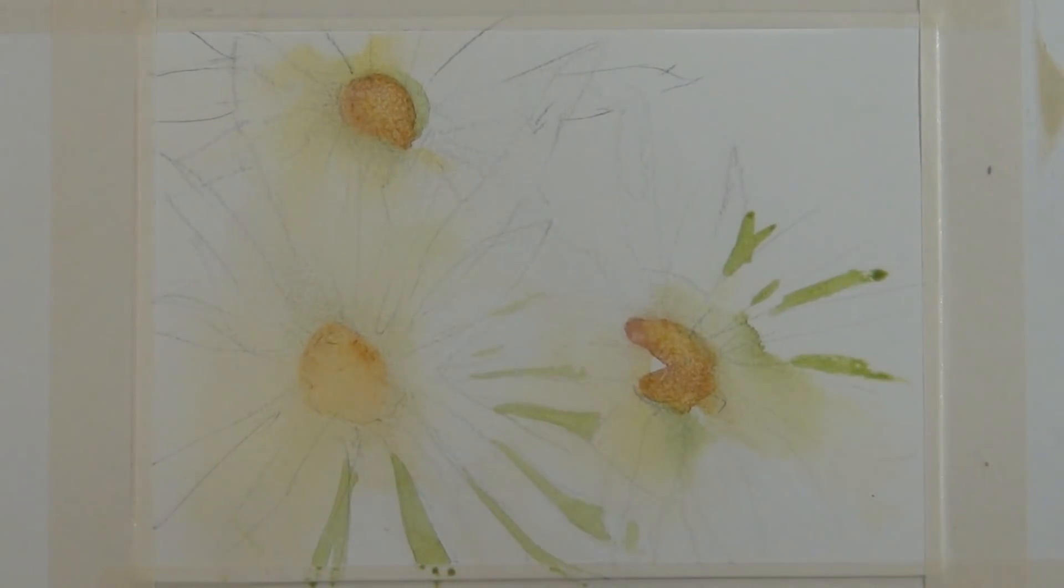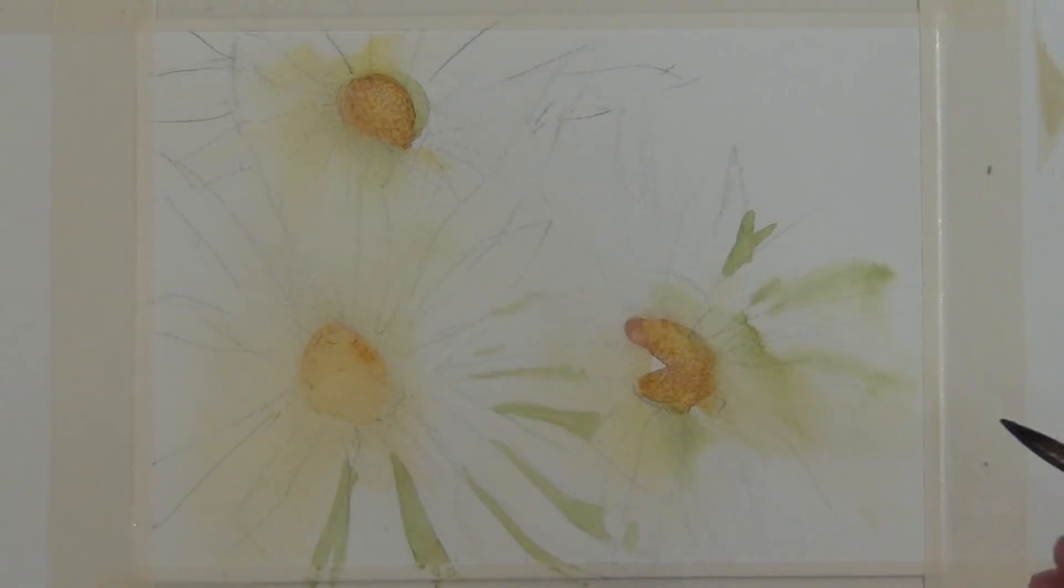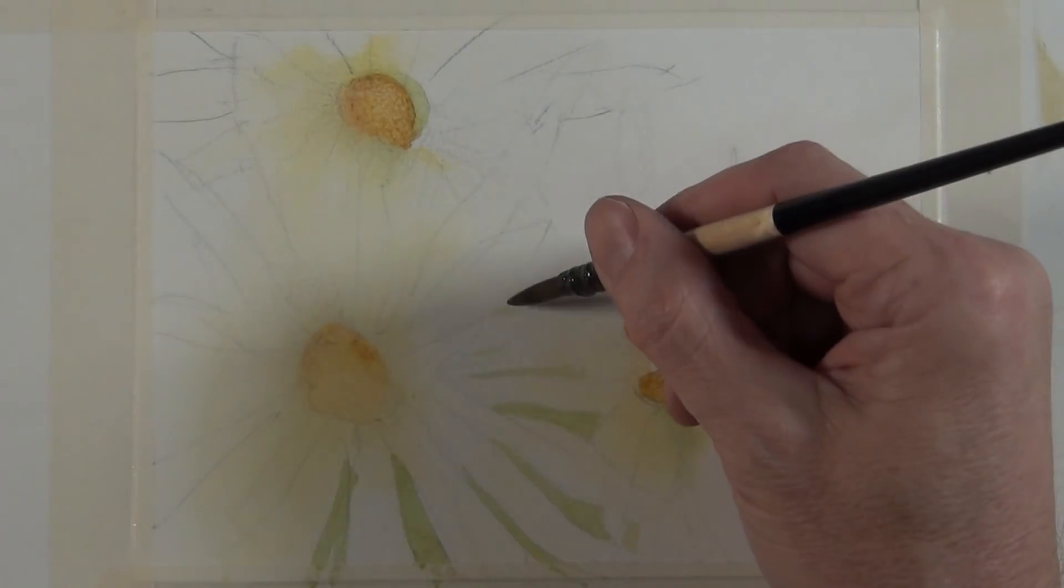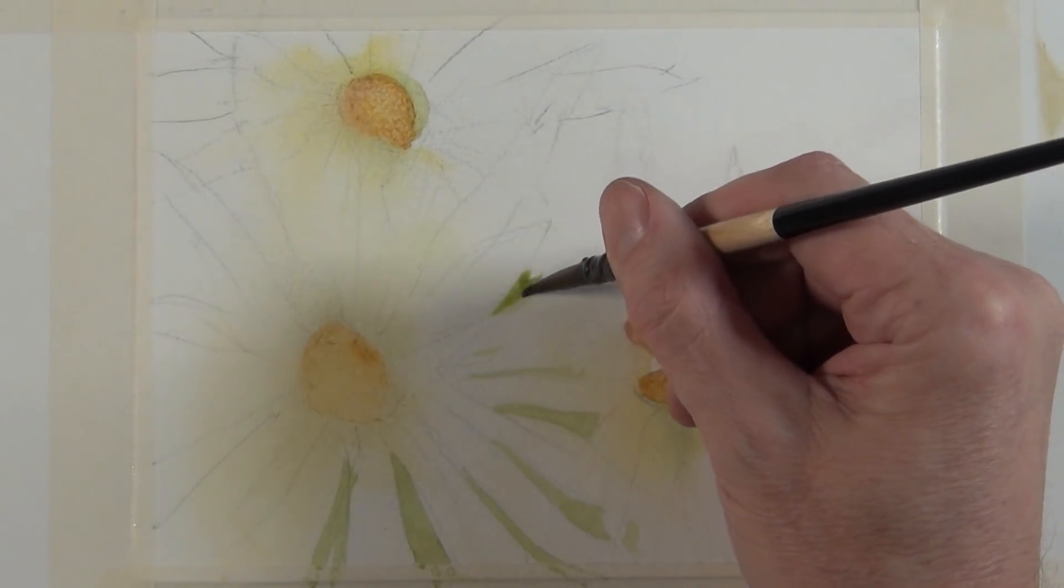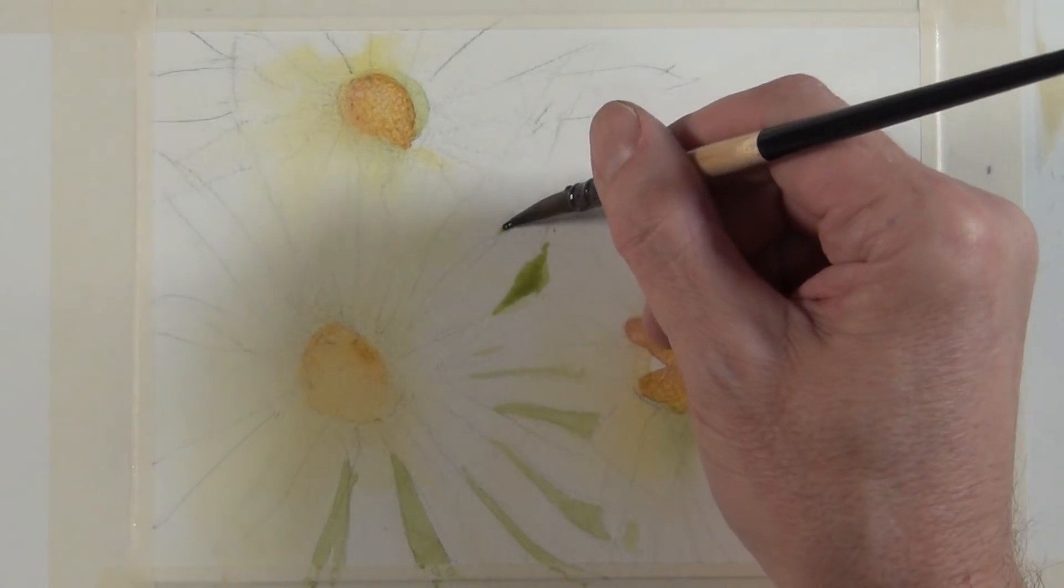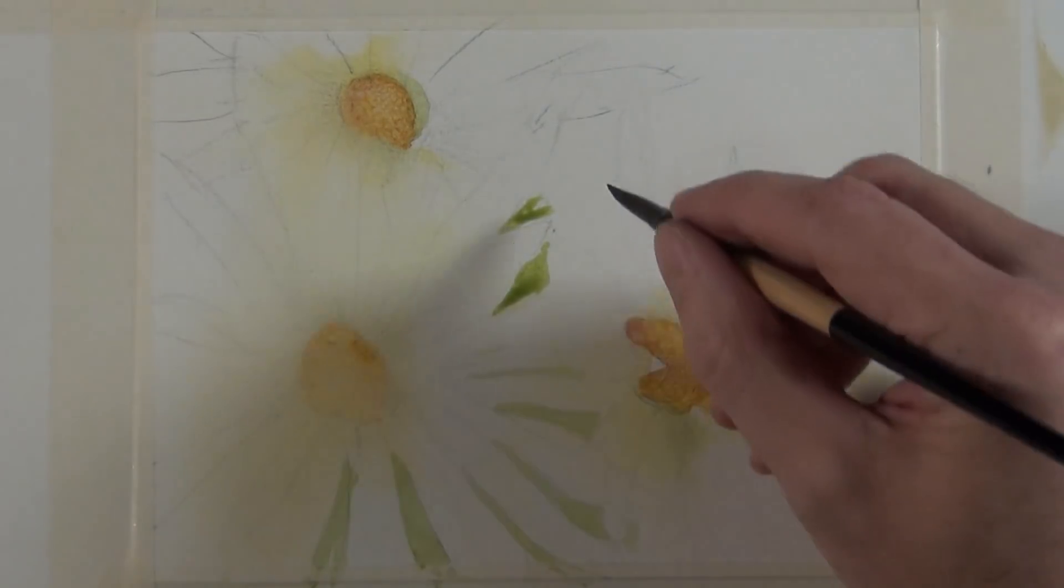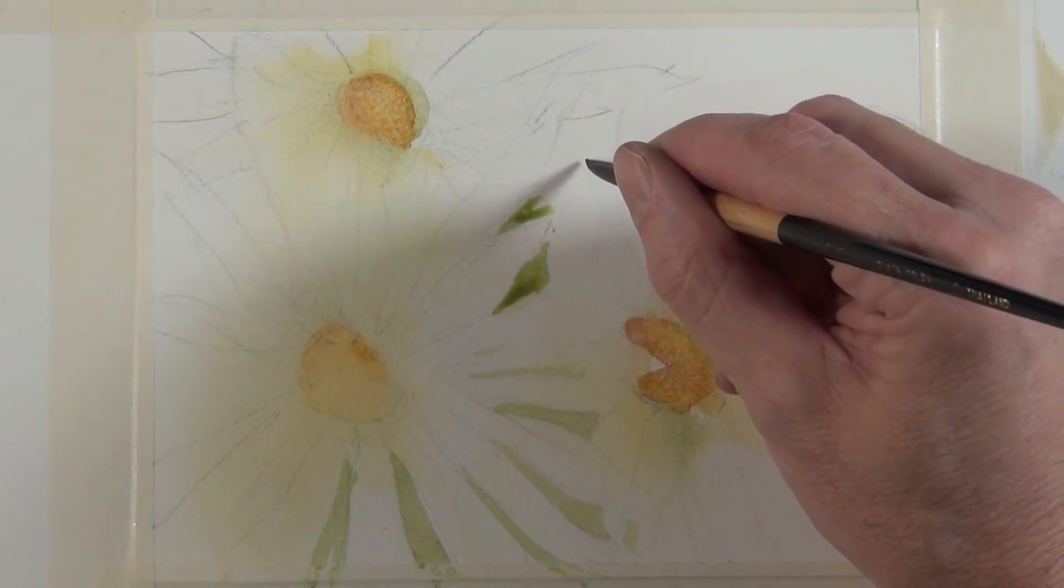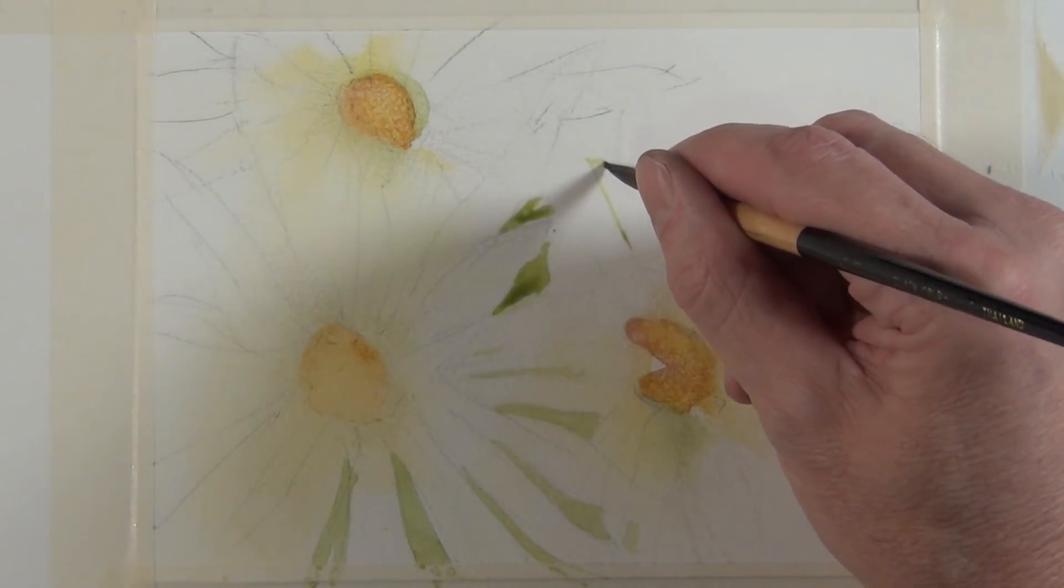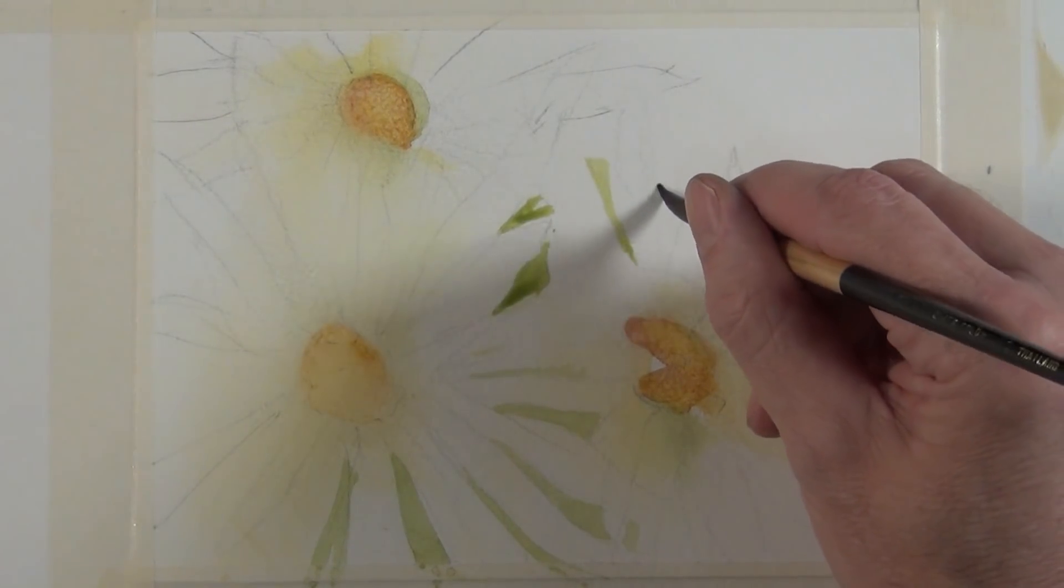And by working in those negative areas and painting those with a darker value, it starts to send the shape of the flower forward. Here I continue to look for interesting shapes that are created by the intersection of petals from the various flowers. And I keep painting in negative areas around these flowers and I don't tell the whole story. I try to give just enough information to give an indication of what's happening there.